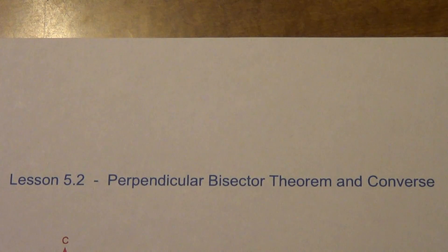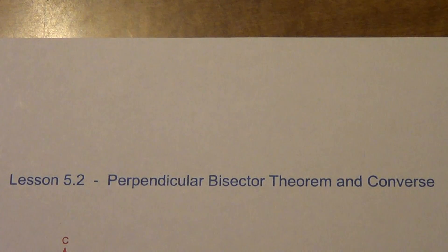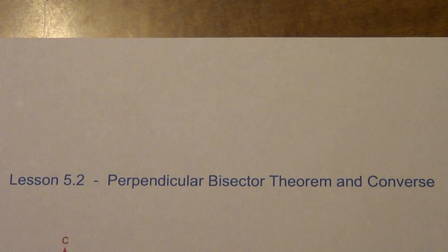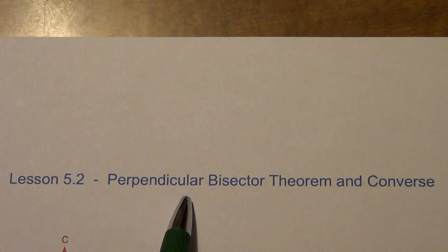Lesson 5.2 talks about the perpendicular bisector theorem and its converse. Remember, converse means we switch the order around, and converses don't always work — this is one of those times where it does. Also for lesson 5.2, you probably already watched it, but it is the compass work for perpendicular bisectors. All three perpendicular bisectors meet at a point called the circumcenter, and the reason certain things are true about the circumcenter comes from this theorem right here.